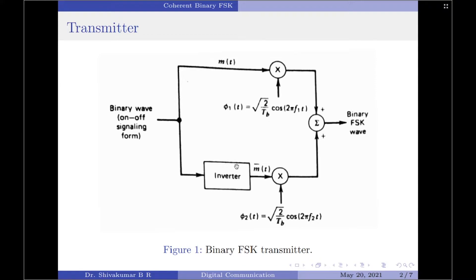That is why we need the inverter — to transmit only one carrier frequency at a time in the binary FSK transmitter. Here we assume that the two oscillators, that is the basis functions phi 1(t) and phi 2(t), are synchronized so that their outputs satisfy the requirement of two orthonormal basis functions.